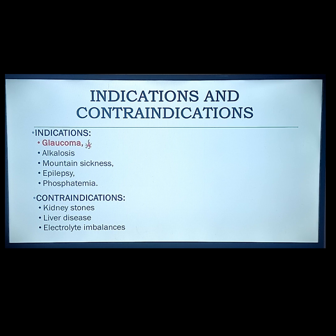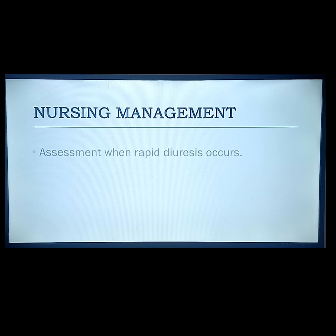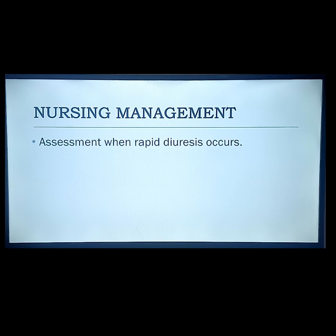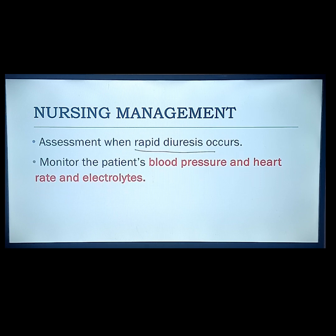The main function of carbonic anhydrase inhibitors is to inhibit the absorption of sodium bicarbonate. For nursing management, assess when rapid diuresis occurs. Rapid diuresis — continuous urination — leads to decreased blood volume, which may lead to hypotension. Decreased blood volume also leads to dehydration, which may lead to shock.